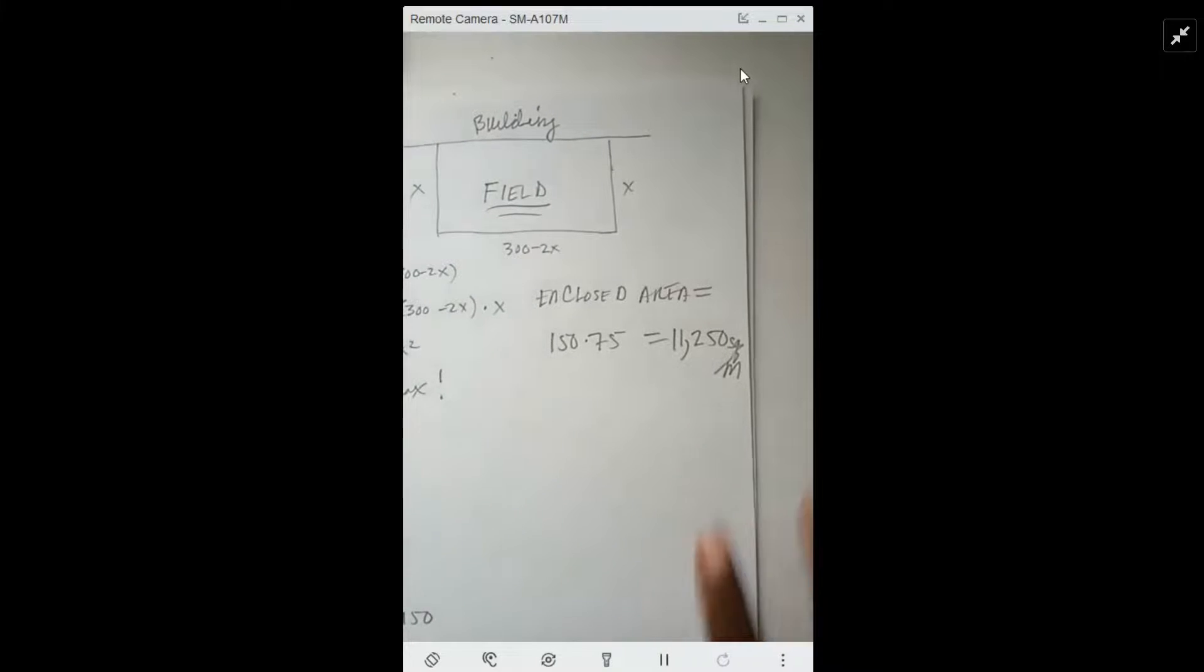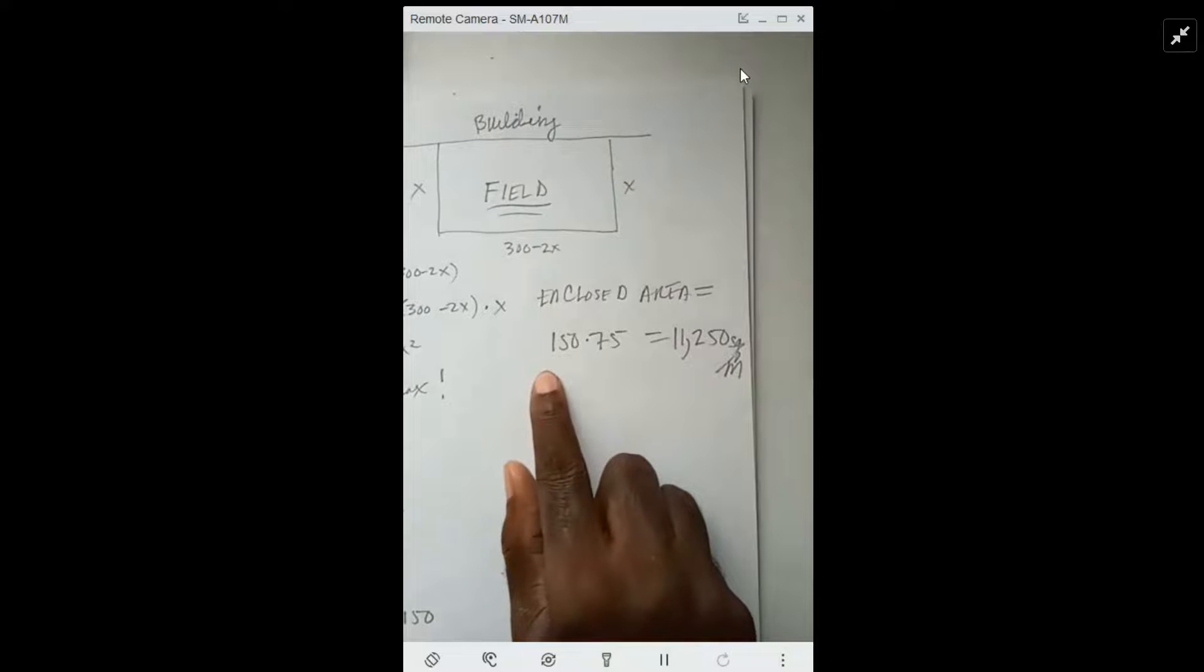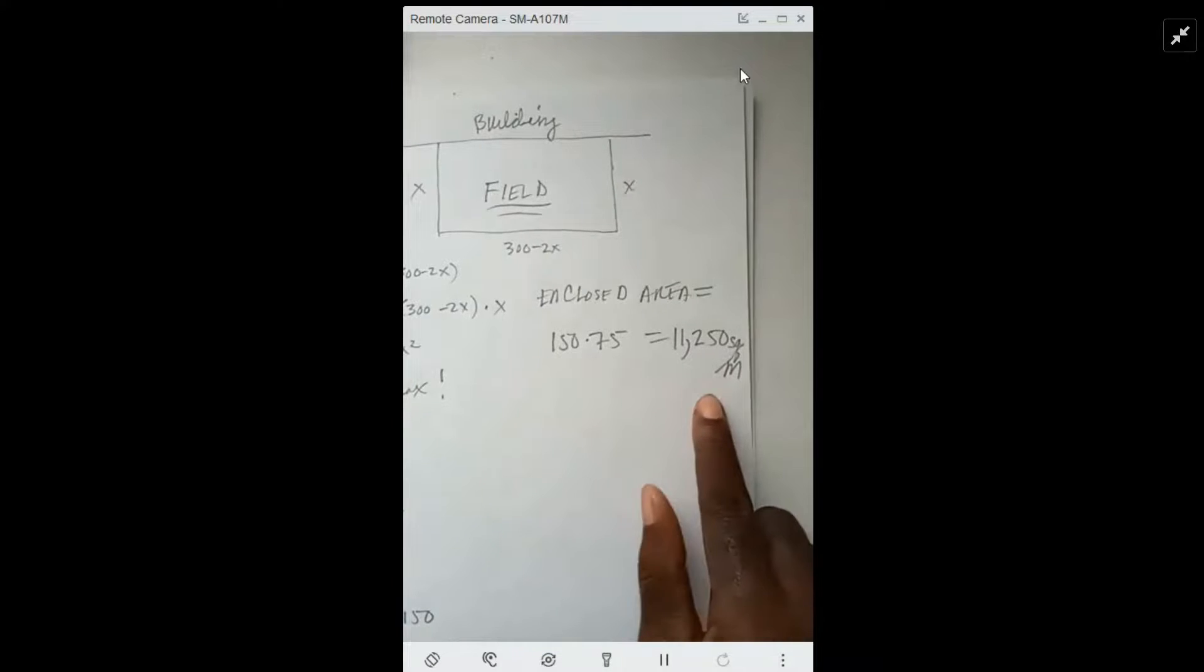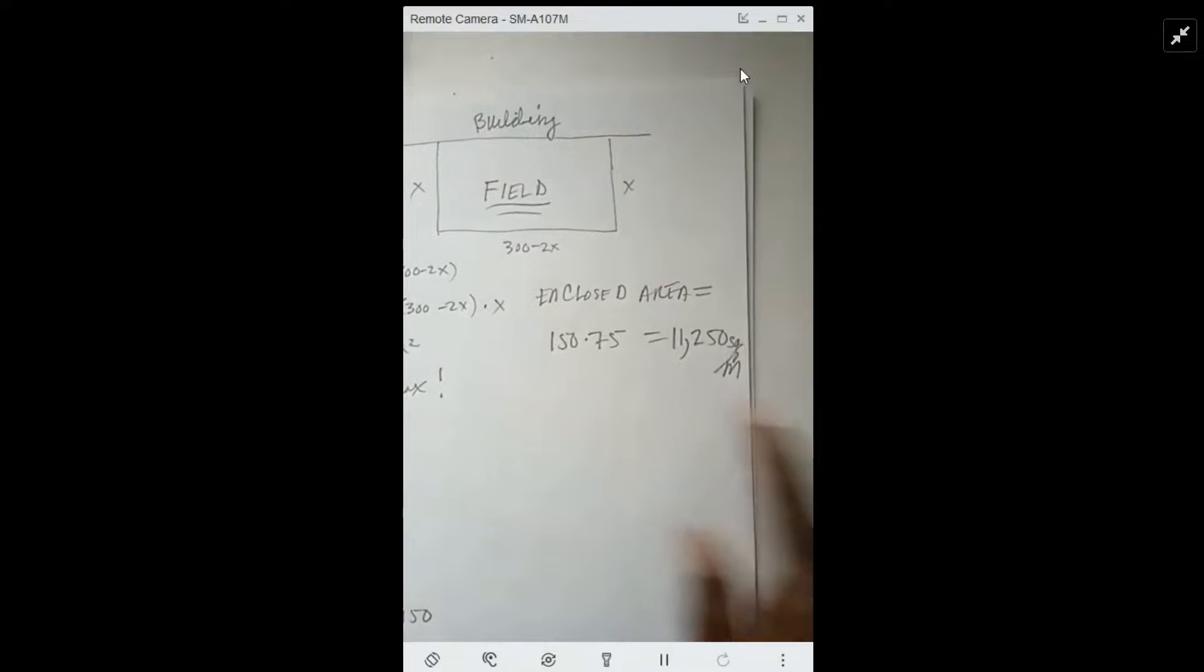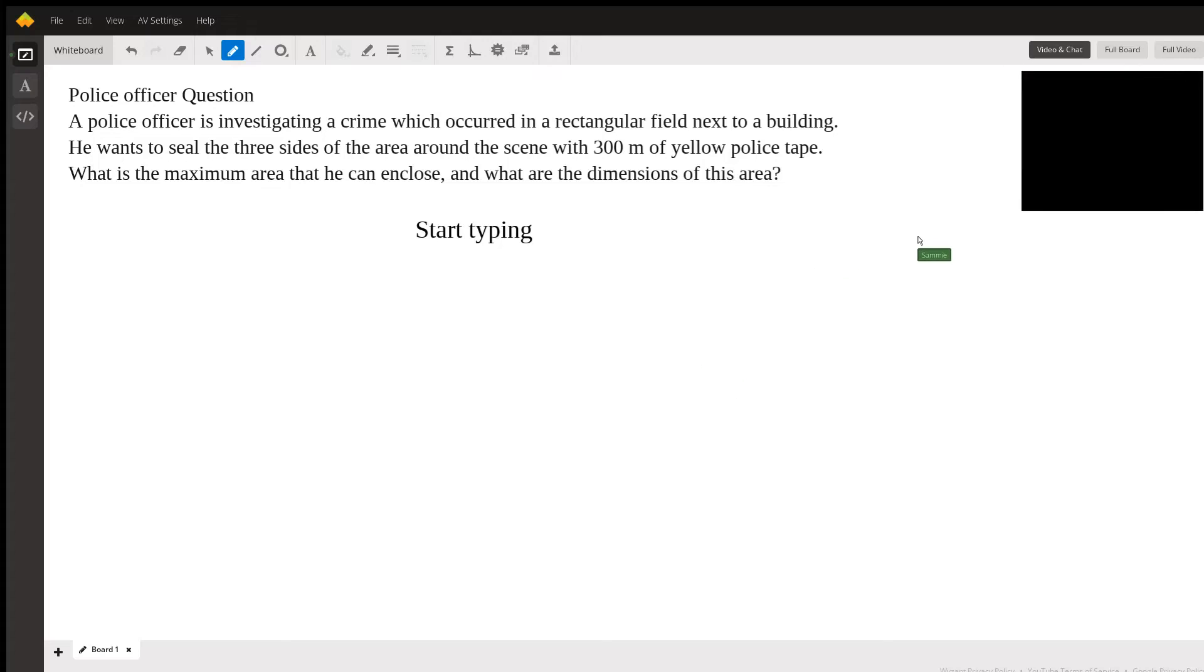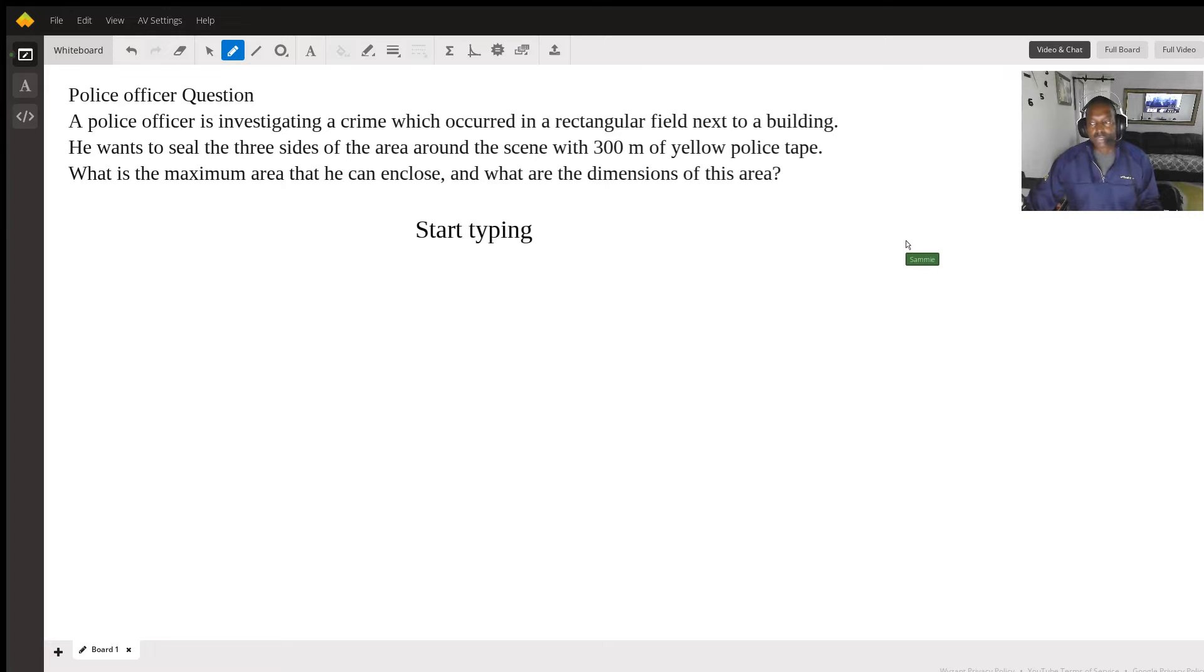We find area as length times width, and so the enclosed area is 75 times 150 which gives 11,250 square meters. That's our video solution to this problem. Thank you very much.